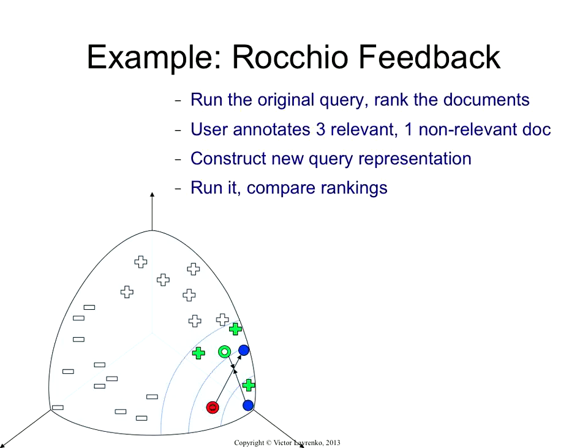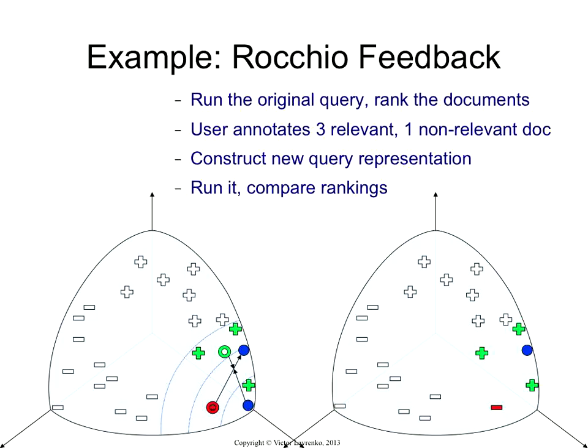So now, is that new query any better? To assess that, you look at what sort of ranking this new query would induce. And this is a toy example, so of course you get a better ranking. These are the iso lines again — they represent the angles between the new query and all the documents in our collection. And in the new ranking, you actually get most of the relevant documents before you start getting non-relevant ones.